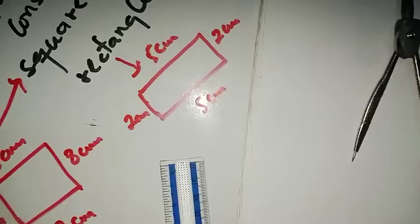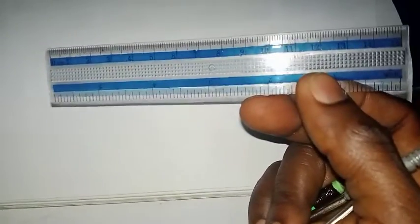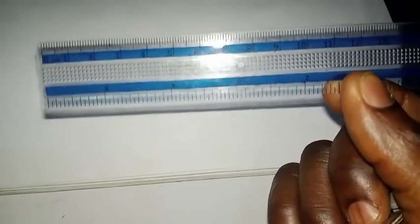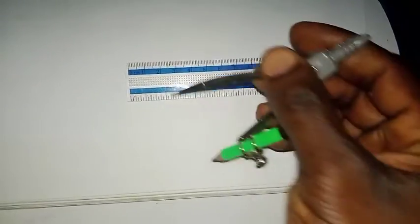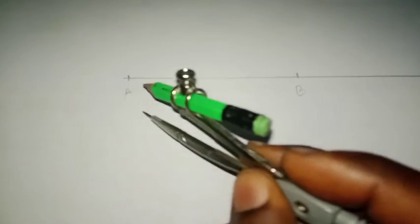Now we are going to construct a square with a side length of eight centimeters. This is the only information we are given. Since all four sides of a square are equal, all sides will be eight centimeters. Our first step is to place our ruler down and draw the eight centimeters baseline, starting from zero.